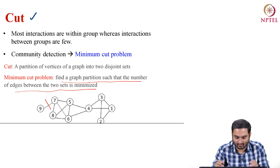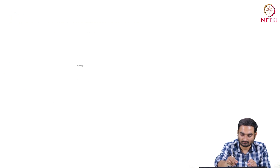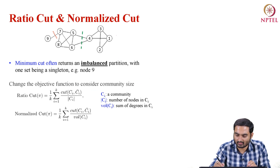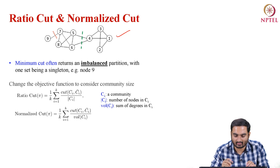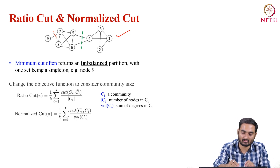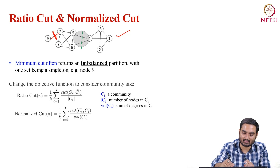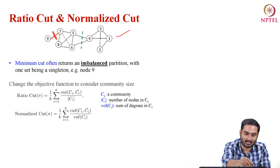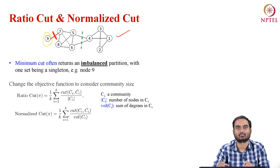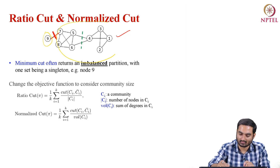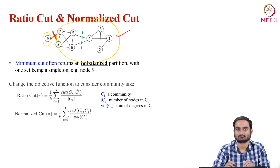If you think of this network and apply the min-cut problem, the output would be to cut here because this involves only one edge being removed. But if we cut here, two edges would be removed. However, think carefully — if I cut here, we will have one community with a single node and another community with a lot of nodes. That is an imbalanced community, an imbalanced partition, and we generally do not want to detect imbalanced communities.